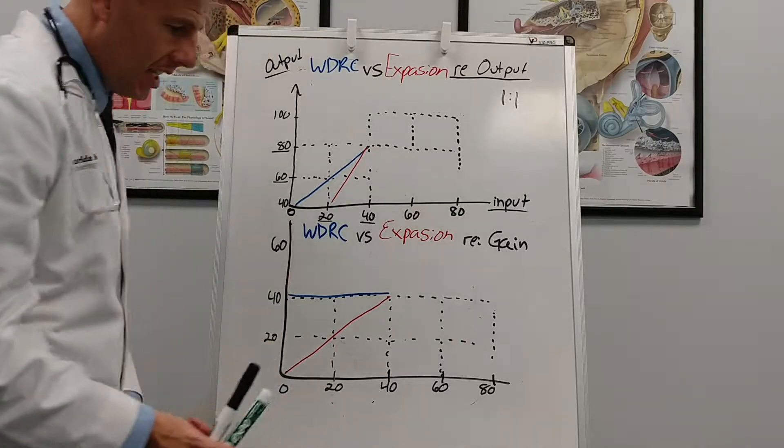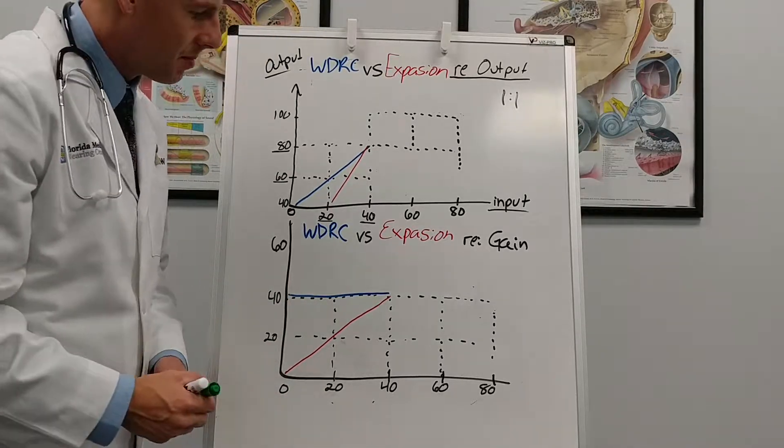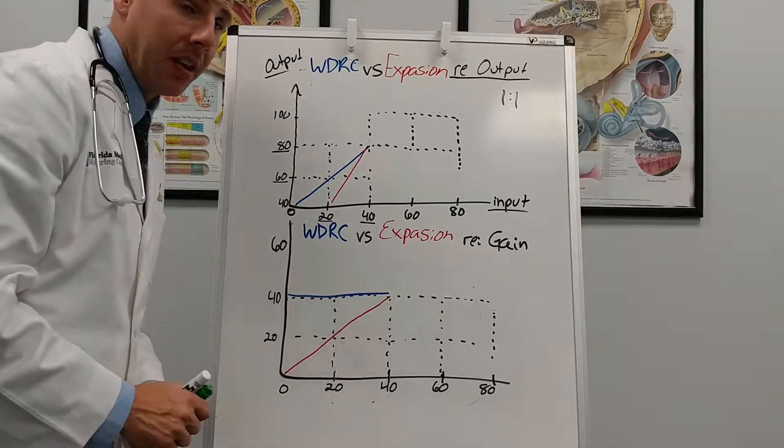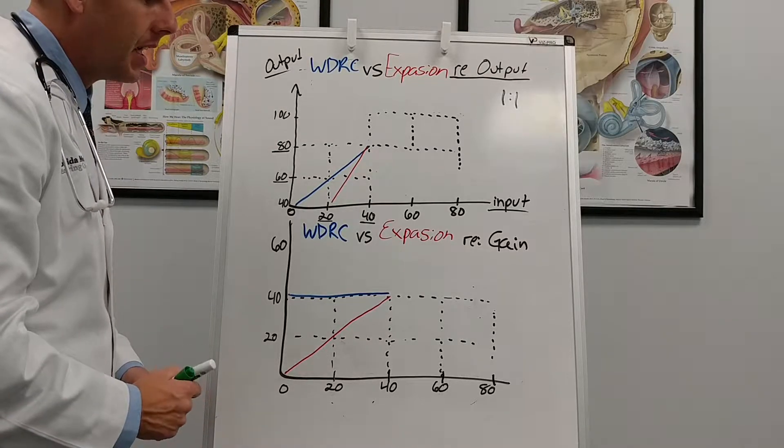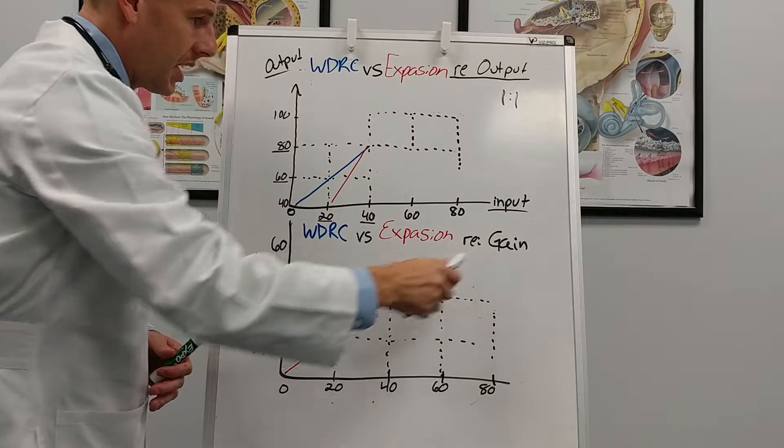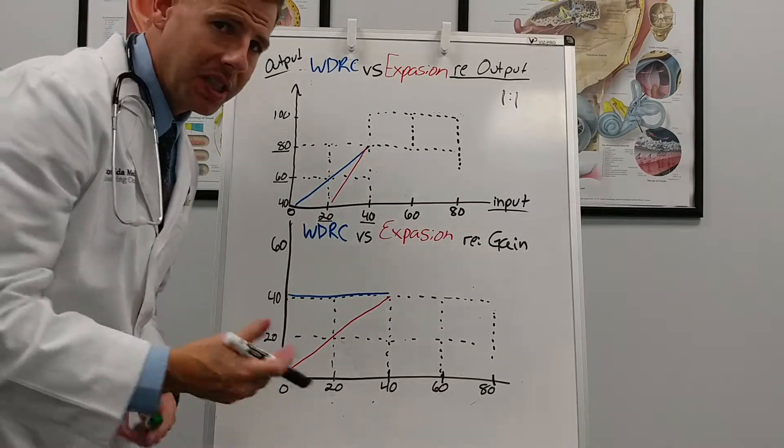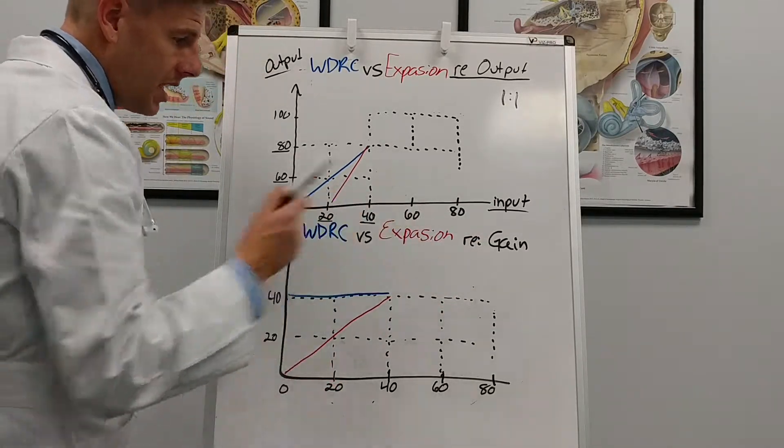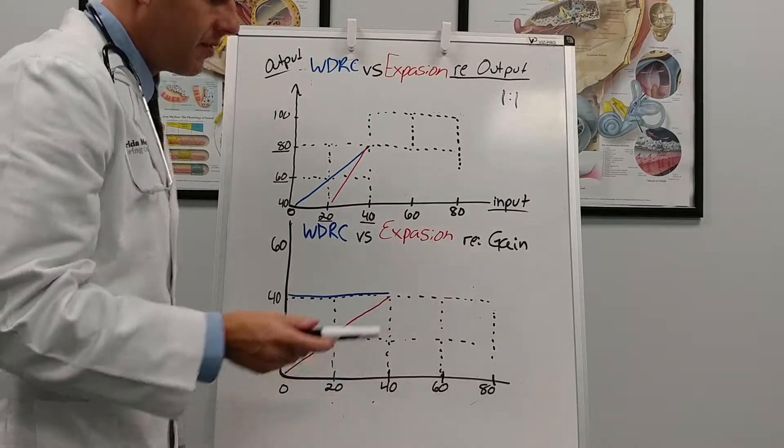So what I want to do today is explain compression and throw a little bit of expansion in there. And what I have here is regarding output and regarding gain and we're going to be doing the same thing. We're dealing with a hearing aid that is giving 40 decibels of gain, so a full on gain of 40.